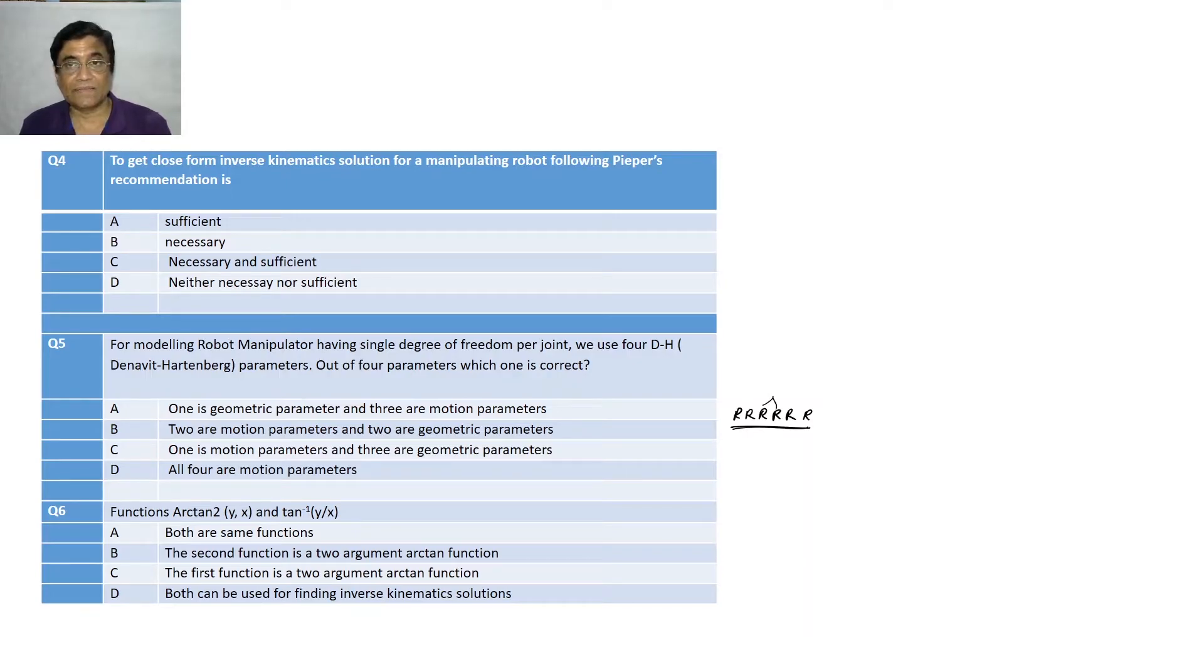And the twist angle, the angle between two successive Z axis, which is measured about X. So, in case of any robot, if it is a revolute robot, then all di, ai minus one, alpha i minus one, they are fixed, the geometric parameters. Only one parameter, theta, which is the revolute joint, which will be a variable. But in case of prismatic robot, some P type, the di, the distance between two successive common normals will be the variable. So, the correct answer is three geometric parameters, one motion parameter. One is motion parameter and three are geometric parameters. So, this is the correct answer, answer C.